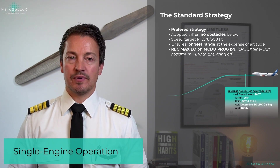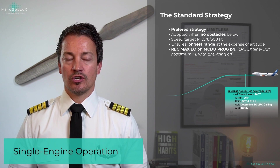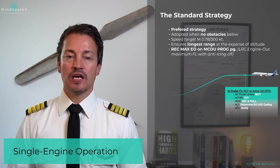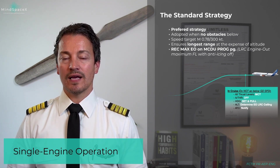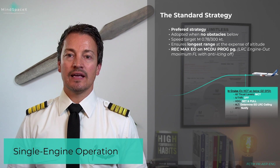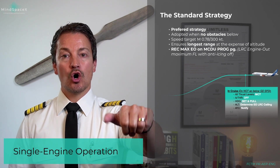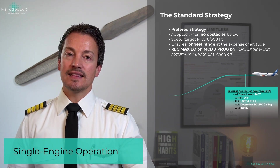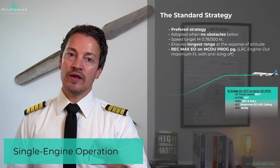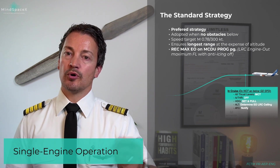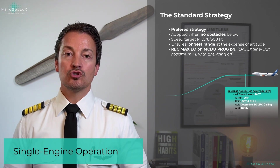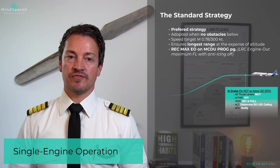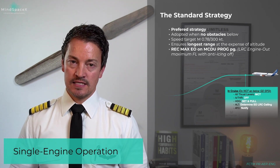When the failure happens, the pilot flying will initially, without any delay, set MCDU autothrust off, then set the heading away from the airway and pull, and then determine the long range ceiling from the MCDU progress page before notifying ATC.